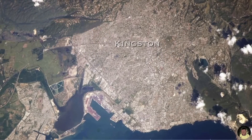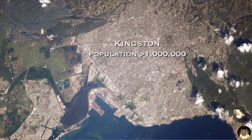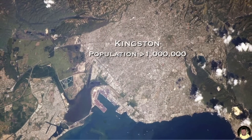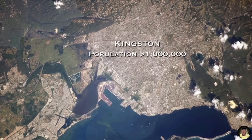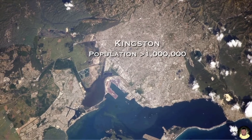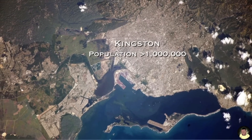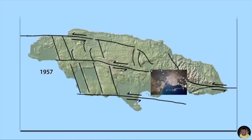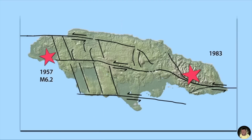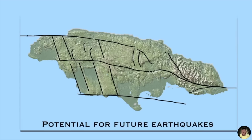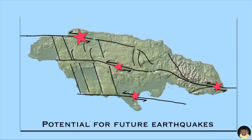In the succeeding 117 years, Kingston has grown to over 1 million people and the population of Jamaica is approaching 3 million. Since 1907, Jamaica has experienced only 68 moderate to strong earthquakes. Yet Jamaica is cut by strike-slip and thrust faults that, at any time, can produce major earthquakes like the 2010 Haiti earthquake.